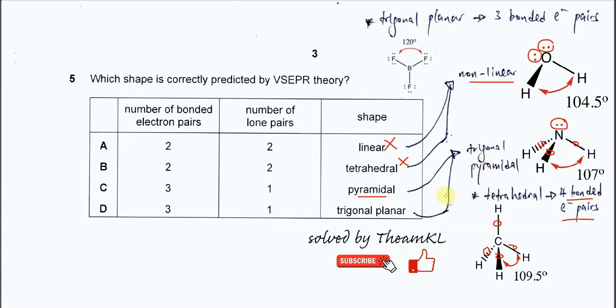Therefore we know that C is the answer, it's pyramidal, it's correct because when there are three bonding pairs and one lone pair it's trigonal pyramidal. And of course the bond angle is 107 degrees, it's slightly smaller than the tetrahedral just now because the repulsions of lone pair to the bonding pair is stronger, so the bond angle is slightly smaller.